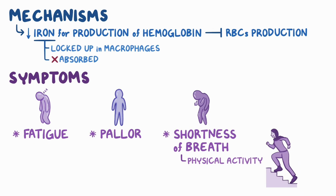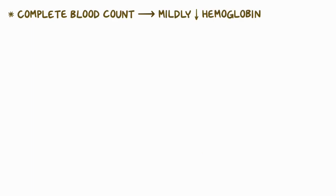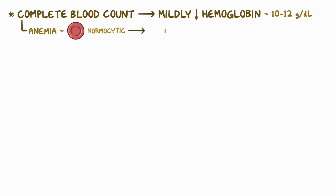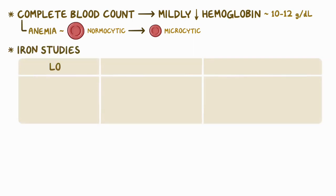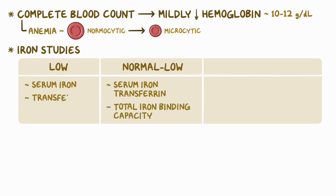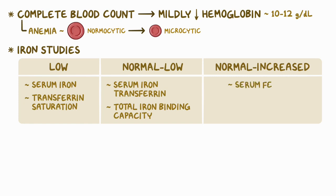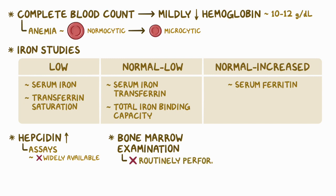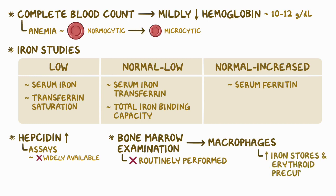Anemia of chronic disease is usually discovered incidentally during the workup for a chronic disease process. A complete blood count usually shows mildly decreased hemoglobin, usually between 10 and 12 grams per deciliter. Initially the anemia is normocytic, meaning RBCs have a normal size, but eventually it can become microcytic, meaning RBCs get smaller. Iron studies show low serum iron levels, normal to low serum transferrin or total iron binding capacity, low transferrin saturation, and normal or increased serum ferritin levels. Hepcidin levels are also usually elevated, although assays to detect hepcidin levels are not widely available. Bone marrow examination, while not routinely performed, can demonstrate macrophages with increased iron stores and erythroid precursor cells.